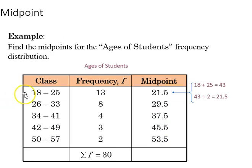Returning to our example, we can find the midpoints by adding together these limits, 18 plus 25 divided by 2, that gives us 21.5, and you can do that for each of the remaining rows.